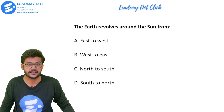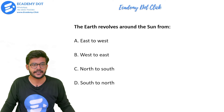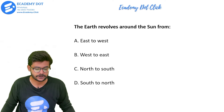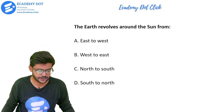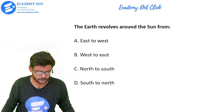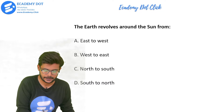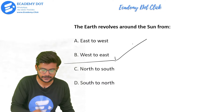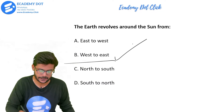The earth revolves around the sun in which direction? Options are east to west, west to east, or north to south / south to north. The right answer is option B, that is west to east.